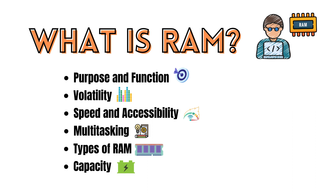In summary, RAM is a crucial component in a computer system, providing the fast and temporary storage necessary for the CPU to perform tasks efficiently. The amount and speed of RAM in a computer play a significant role in determining its overall performance and ability to handle various applications and workloads.